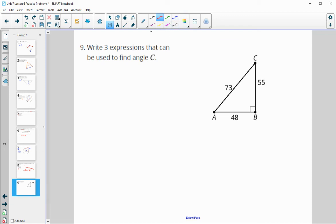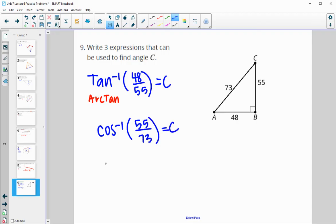Number 9 asks us to write expressions that can be used to find angle C. We have a right triangle, so we can use inverse trig. We could do a tangent inverse function. Tangent is opposite over adjacent, so the opposite is 48, the adjacent is 55. You can write arc tan instead of that negative 1 if you wanted to. We could do a cosine inverse function, which is the adjacent side 55 over the hypotenuse 73. Or we could do a sine inverse function, which is the opposite 48 over the hypotenuse 73.